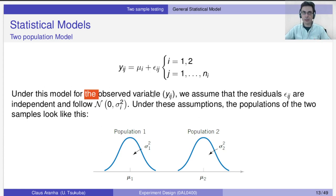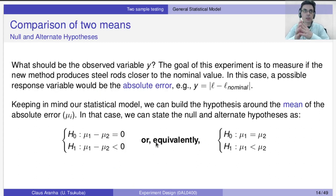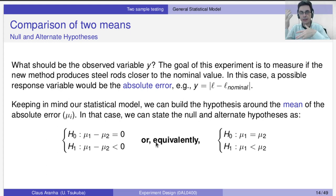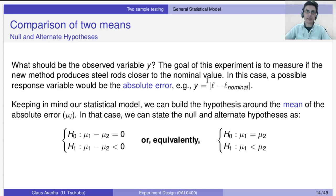From this model, if we assume the epsilon_ij values are independent and follow a normal distribution, the two samples will each look like a normal distribution — one method follows a normal distribution and the other also follows a normal distribution, with different means and different variances.